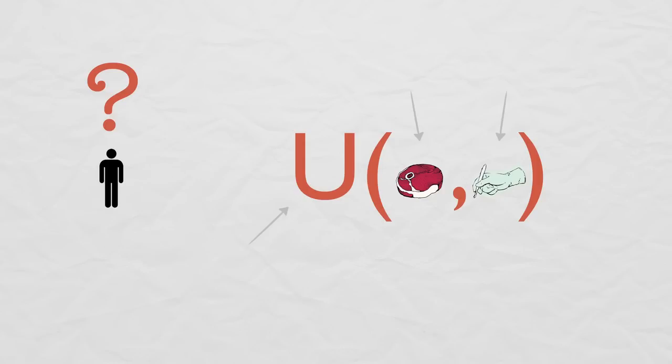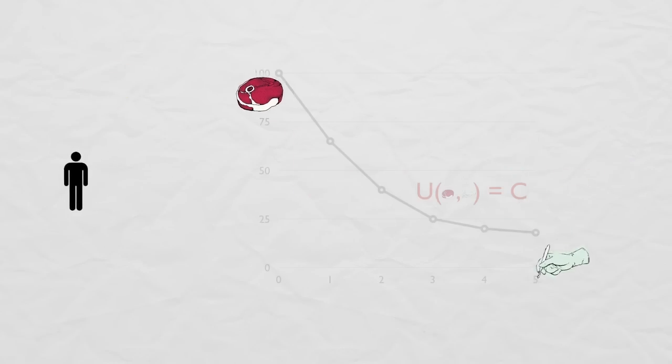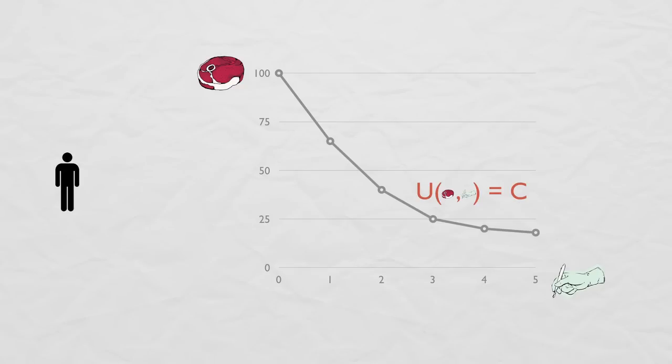To avoid this, we're going to take a level set of Carl's utility and draw that. This level set is called an indifference curve. Carl is indifferent between every bundle on this curve since everywhere on the curve gives the same utility value.